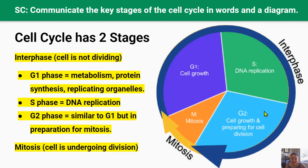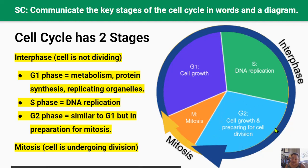Once the cell has replicated its DNA, it carries out its final jobs to prepare for cell division in the second growth phase called G2. The cell makes more proteins that are necessary and replicates more of its organelles like the mitochondria to prepare for mitosis. Also, the chromosomes are checked for errors and any required repairs to the DNA made in the previous phase. G2 signifies the end of the interphase, and the cell is now ready to divide.